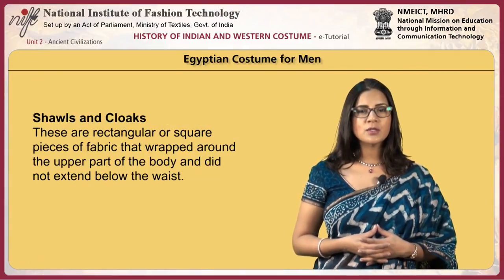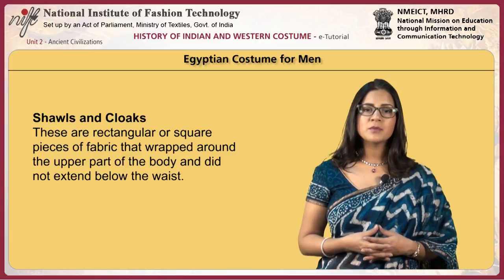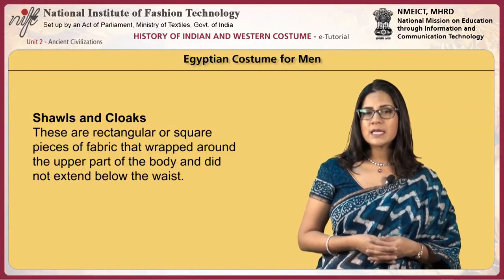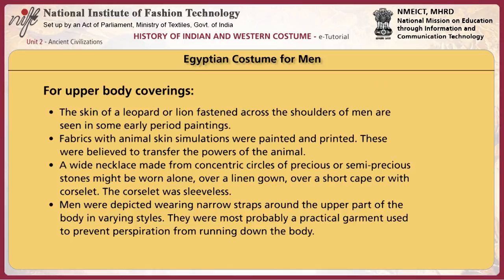These are rectangular or square pieces of fabric that wrapped around the upper part of the body and did not extend below the waist. For upper body coverings, the skin of a leopard or lion fastened around the shoulders of men is seen in some early period paintings. In later periods, fabrics with animal skin simulations were painted and printed, believed to transfer the powers of the animal.